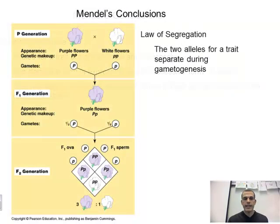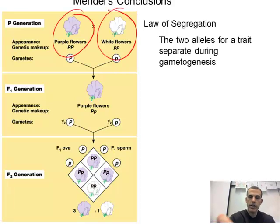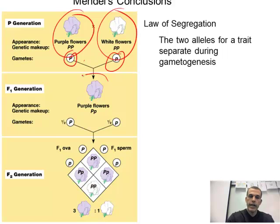Moving on to the next law is the law of segregation. This strictly deals with the gametes, or the sex cells. This is Mendel's first initial cross, the P generation. What happens here is that separation occurred — he ended up with one allele from each parent. Gametogenesis, or meiosis, occurred. The alleles separated, and when they became fertilized together, he ended up having his heterozygotes, or his hybrids.